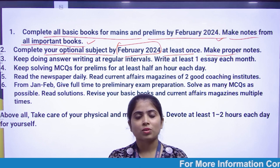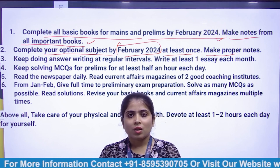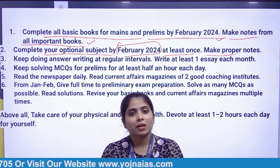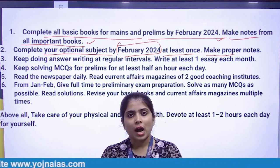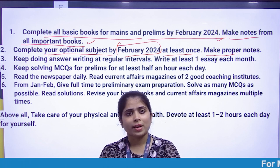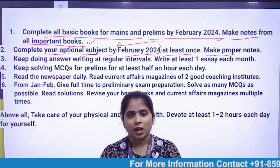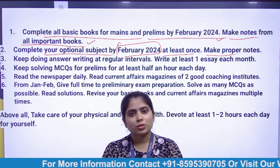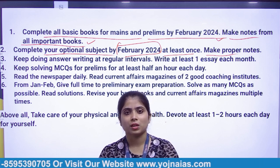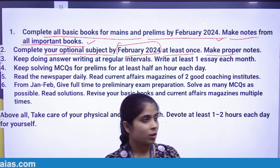For subjects like Sociology, the optional is relatively smaller. Some students without a background in the subject have still managed it. Basically, you have a maximum of 4 months, so start your optional now and finish it by February 2024, and prepare proper notes.